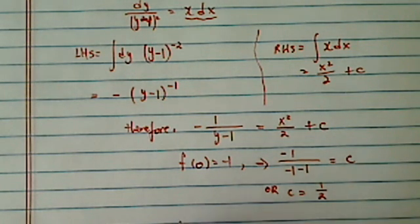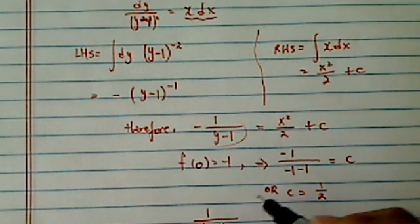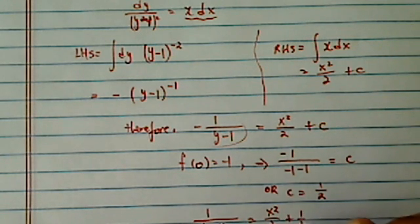So for my complete solution, I have, let's absorb this minus sign. So 1 minus y is equal to x squared over 2 plus half.